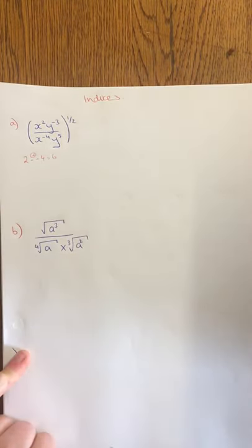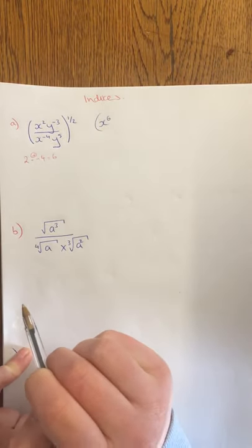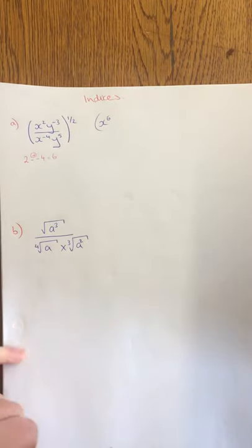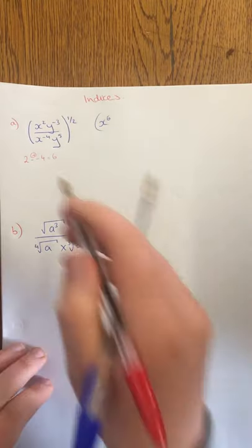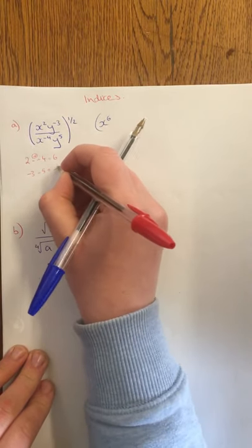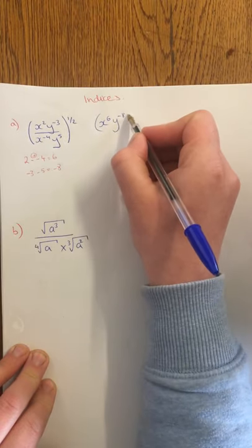So I just have for my next part x to the power of 6. Do the same thing with the y's. So y to the minus 3 and a y to the 5. When you're dividing, subtract the powers. So you do minus 3 take away 5, you're left with a minus 8. So I have y to the minus 8.